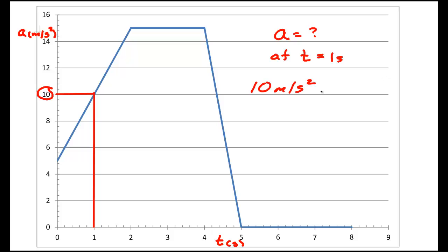Or if we want to write it in terms of vectors, 10 meters per second squared i hat, assuming this was in the x direction, j hat if it was in the y direction, so forth. So 10 meters per second squared, just find the value of the time, go up, read it right off the graph. The easiest type of problem that can be given on this type of graph.